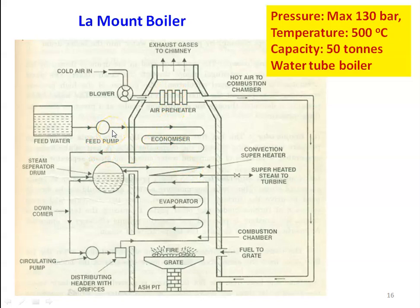The Lamont boiler is a high pressure boiler operating at 130 bar with a temperature of 500 degrees Celsius. The capacity is 50 tons per hour and it is a high pressure water tube boiler.